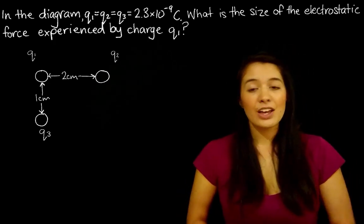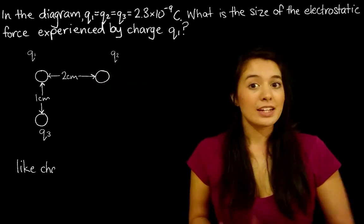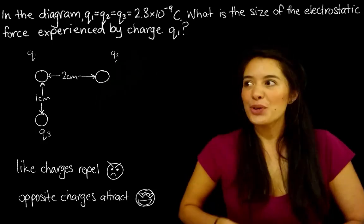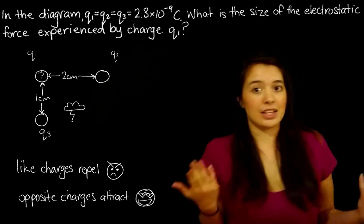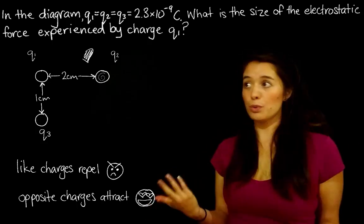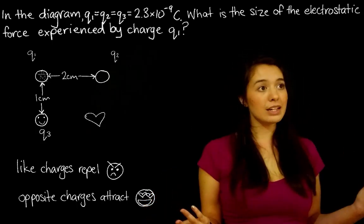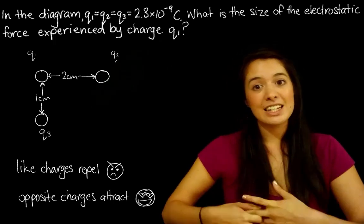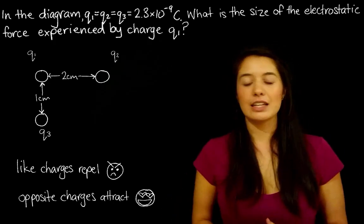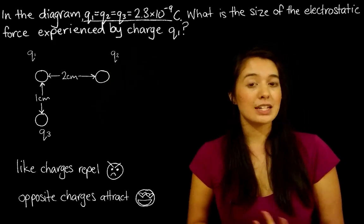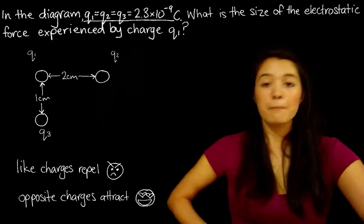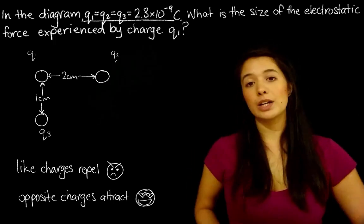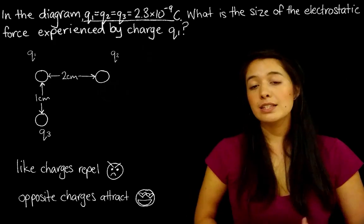The second thing is, what's actually happening in the system? We know that like charges repel and opposite charges attract, right? So are these charges repelling each other? Are they attracting each other? Are they positive? Are they negative? Well, the question doesn't tell us straight up, but if we take a closer look, it does tell us that the magnitude of all the charges is 2.3 times 10 to the negative 9 coulombs, which is a positive number. If the question were trying to tell us that the charges were negative, it would have a minus in front of the 2.3. So that's the second thing.